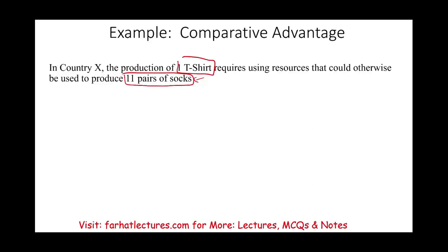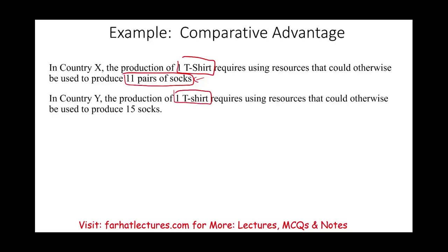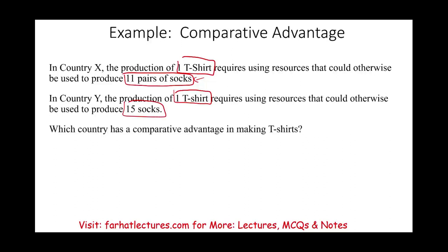In Country Y, producing one t-shirt requires giving up 15 pairs of socks. Which country has the comparative advantage in making t-shirts? Country X — because they only have to give up 11 pairs of socks, whereas Country Y must give up 15. Country X should use its resources to produce t-shirts, since it's less costly for them to do so.